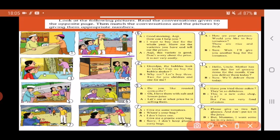Now let's go to picture number two. Here you can see an old grandfather walking with his grandchildren on a street, and there is a man here who's selling some bubble machines and making bubbles on the road. Now let's read this conversation box. The child says, Grandpa, the bubbles look so lovely. Can we buy the bubble maker?